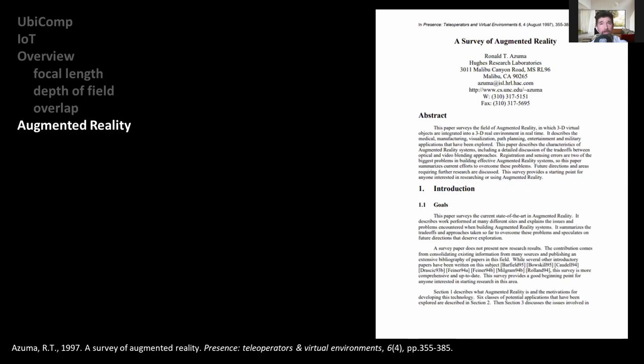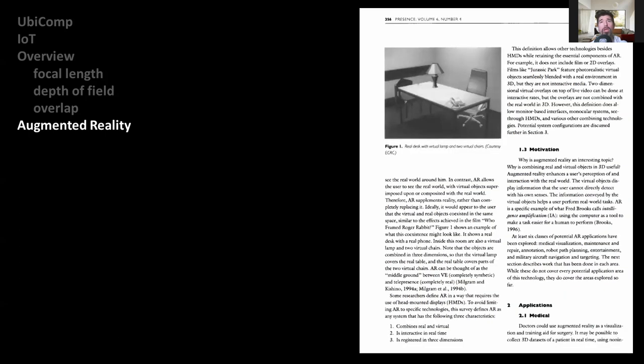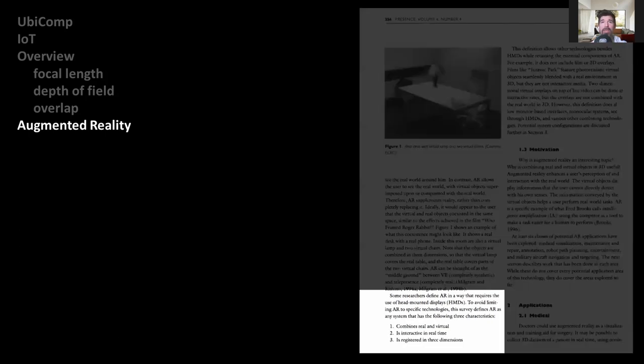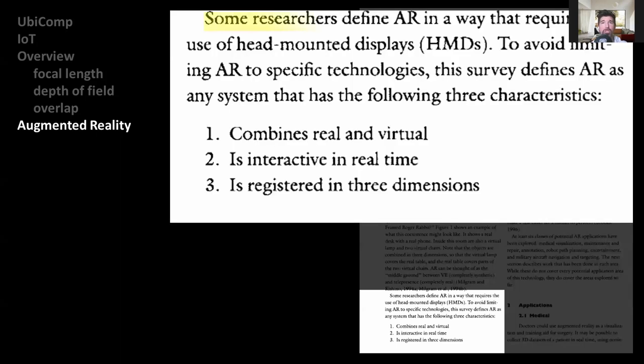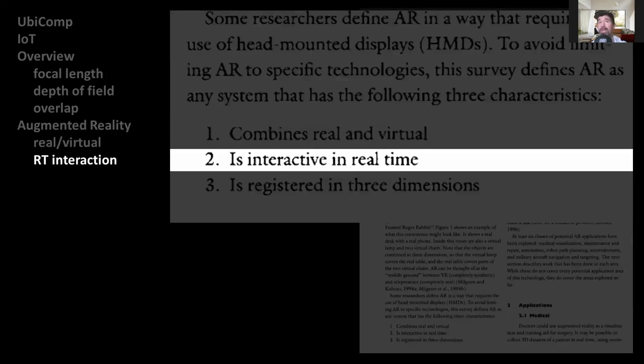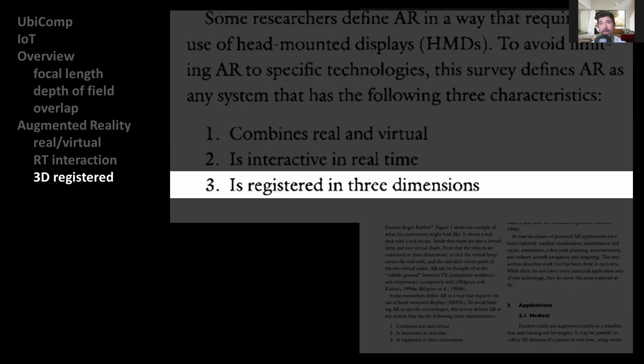Based on all the previously mentioned things, we arrive at this highly cited paper by Azuma called A Survey of Augmented Reality, where he addresses the visual aspect, saying that some researchers define AR in a way that requires the use of head-mounted display. To avoid limiting AR to specific technologies, the survey defines AR as any system that has the following three characteristics: combines real and virtual, is interactive in real time, and is registered in three dimensions.